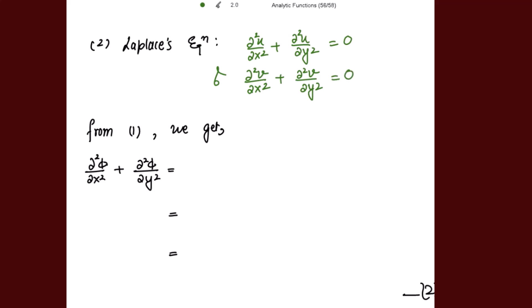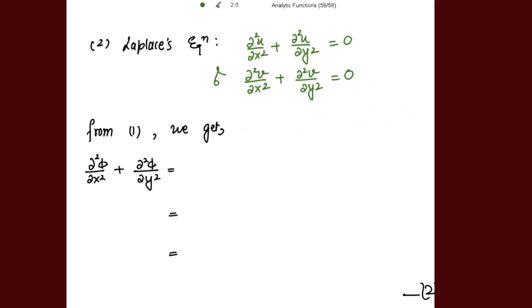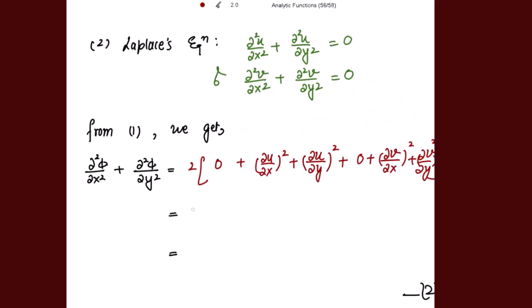I am going to use these equations in our expression. From Laplace's equations, the first bracket term (with u) is 0, and the bracket term with v is also 0. So we are left with only the four squared-derivative terms. I will now apply the CR equations to these remaining terms.